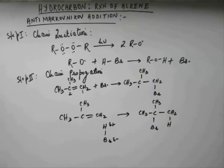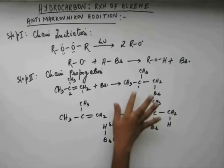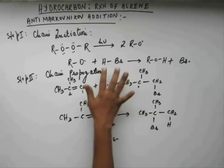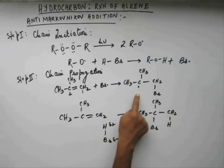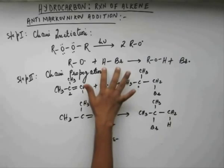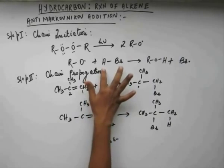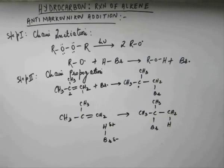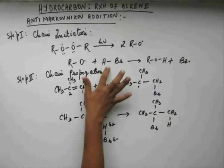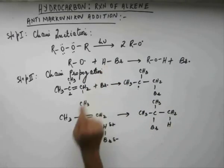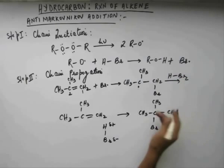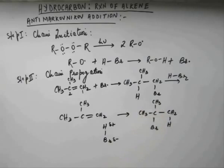This C· also has to complete its octet. It can react with the entities present in the system — the peroxide (which won't bond to C· since its octet is complete), another alkene molecule, or HBr. The reaction will preferably be with HBr because the H-Br bond is weak due to the difference in size between hydrogen (first period) and bromine (fourth period). The extent of orbital overlap is poor, making this bond weak. So this C· will grab a hydrogen from one of the HBr molecules present in the system, and hydrogen will get attached to this carbon.